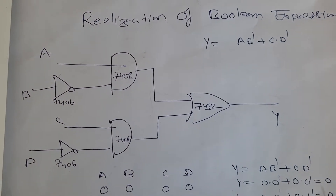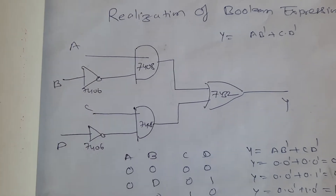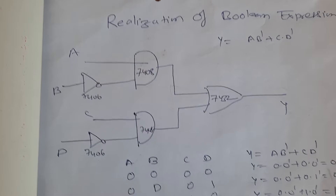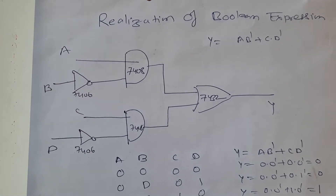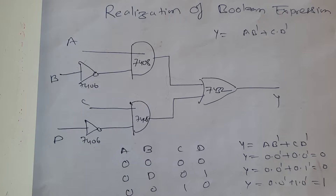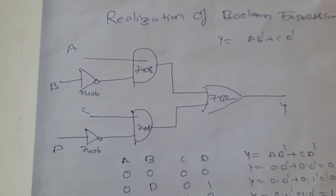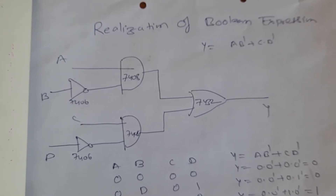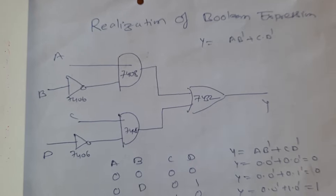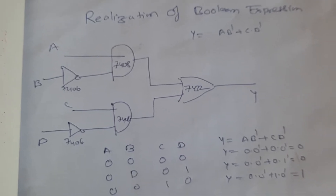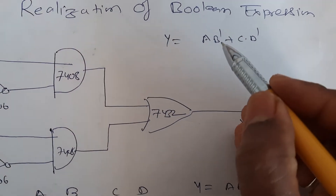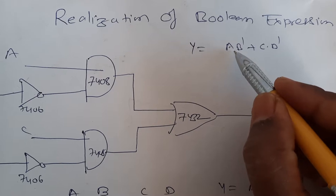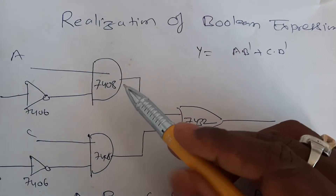This expression we have to realize using the basic gates. As we know, the basic gates are NOT gates, AND gates, and OR gates. The NOT gate IC number is 7406, AND gate IC number is 7408, and OR gate IC number is 7432. We have to identify the required gates from the expression. Here A·B means there is an AND operation, so we require an AND gate.